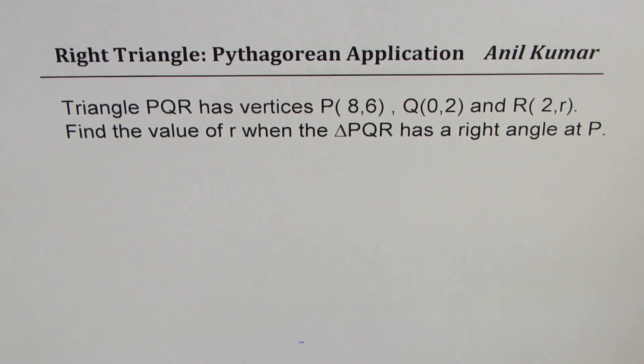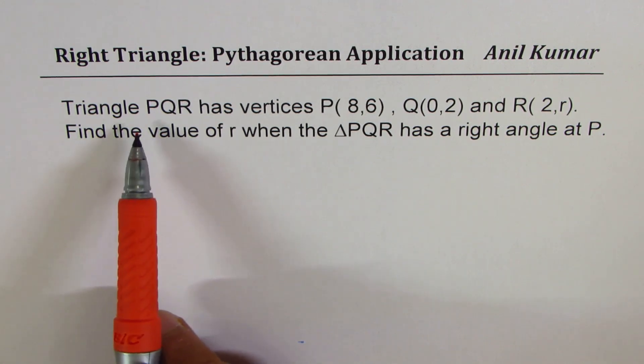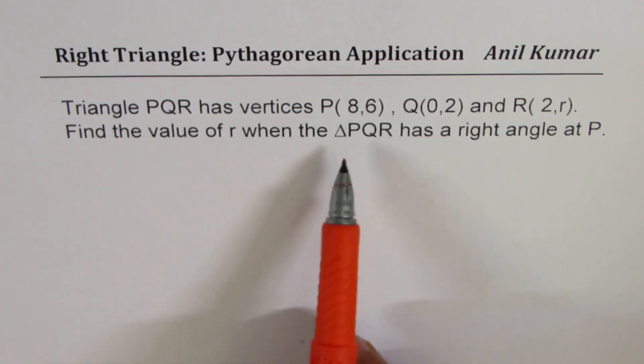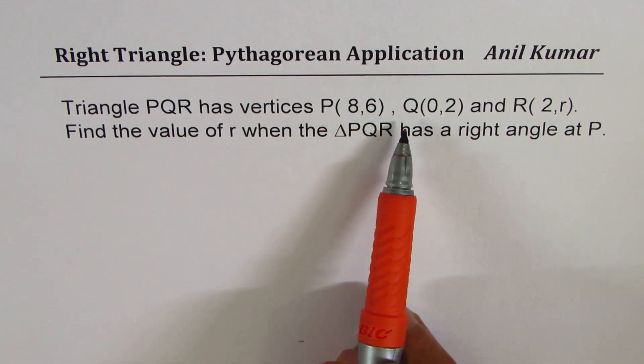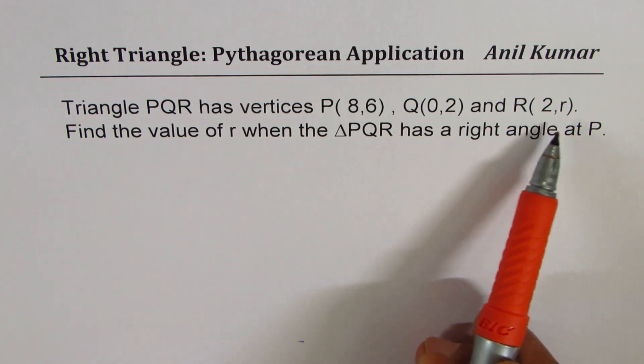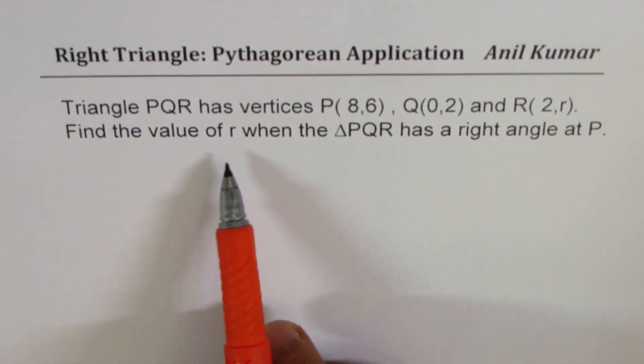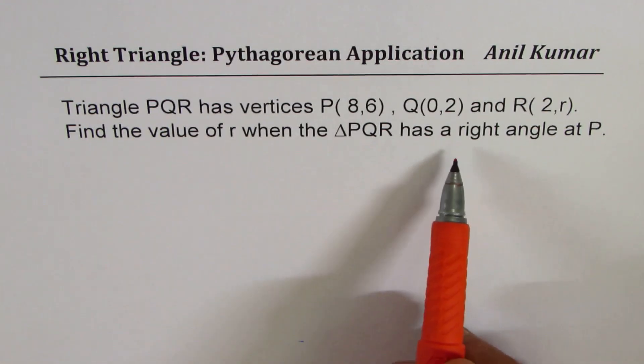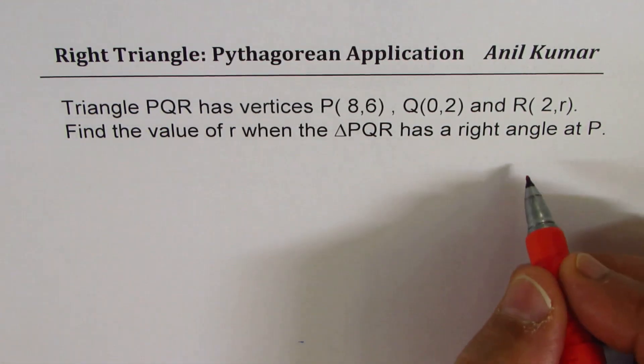The question is based on application of Pythagorean theorem. A triangle PQR has vertices at P(8,6), Q(0,2) and R(2,r). Find the value of r when triangle PQR has a right angle at P.